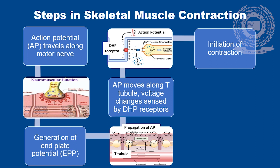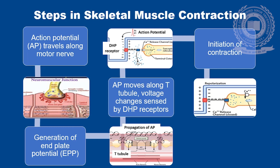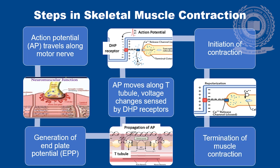This increase in calcium in the sarcoplasm increases attractive forces between actin and myosin filaments, causing initiation of contraction. Following this, calcium ions are pumped back into the sarcoplasmic reticulum, which causes termination of muscle contraction.